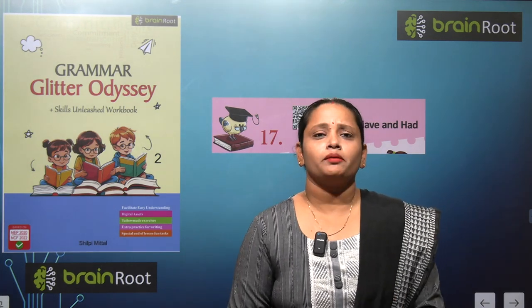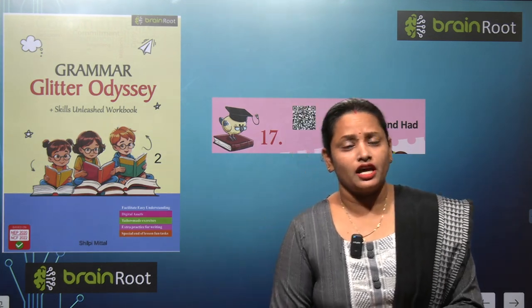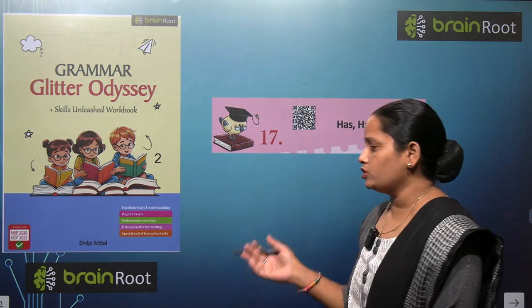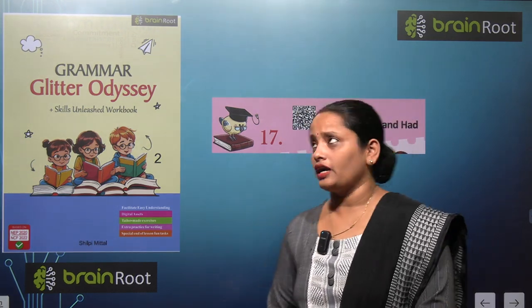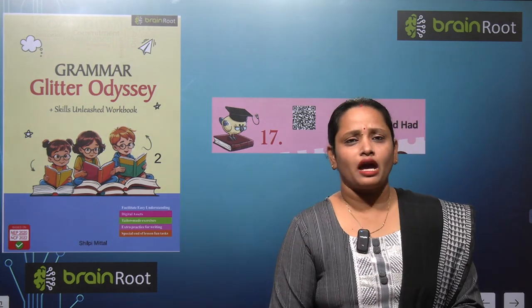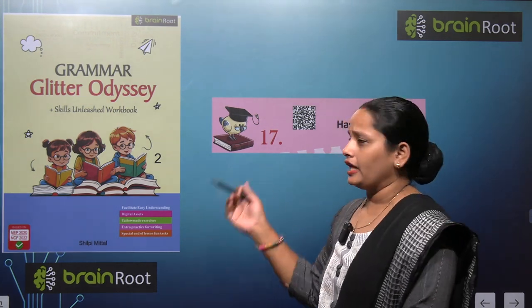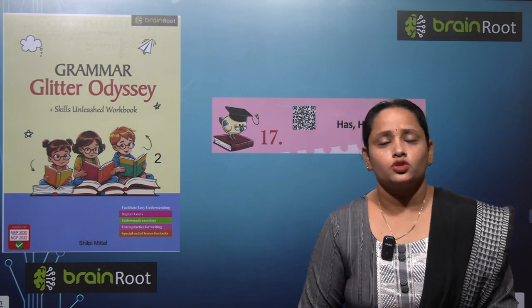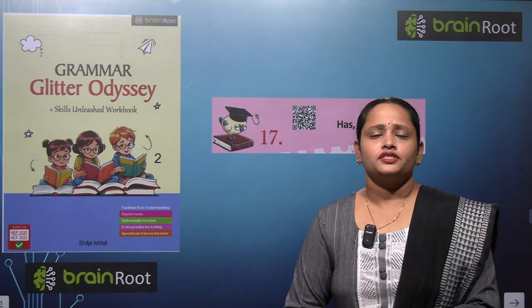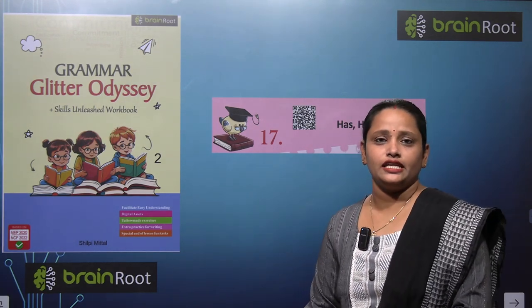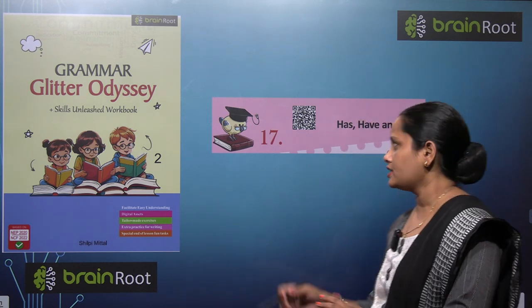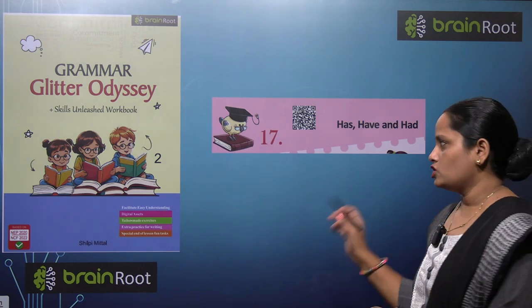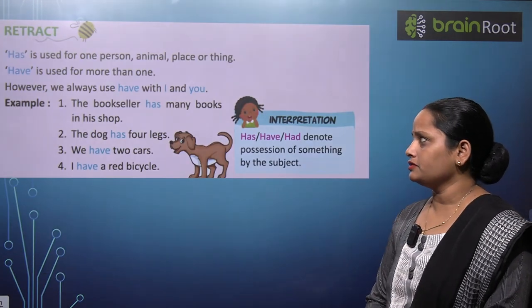Hello my dear kids, welcome back. I am Vandana and we are learning English grammar by the Brain Root series. Here is a book and the name of the book is Grammar Glitter Odyssey, and this is book 2. Today we will start chapter number 17 and the name of the chapter is Has, Have and Had. So let's start the chapter.